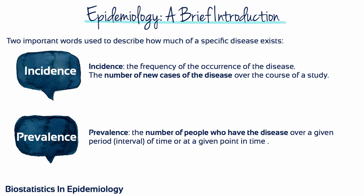There are two important words used to describe how much of a specific disease exists. The first is incidence — the frequency of occurrence of the disease, the number of new cases over the course of a study. The second is prevalence, which is the number of people who have the disease over a given period or interval of time, or at a given point in time.